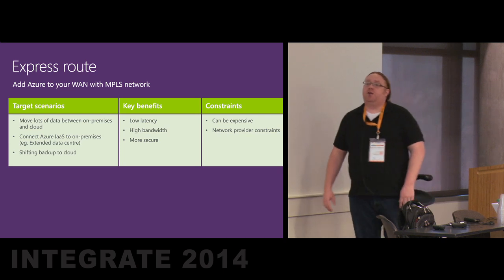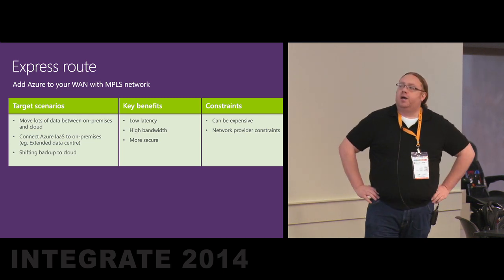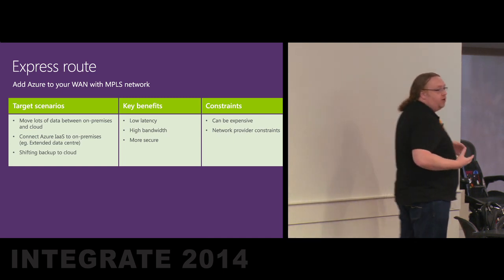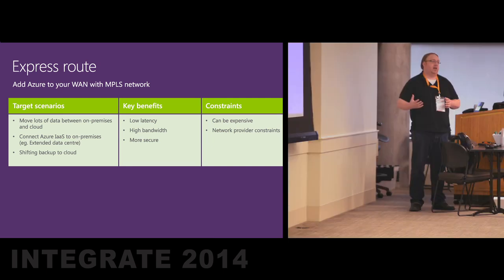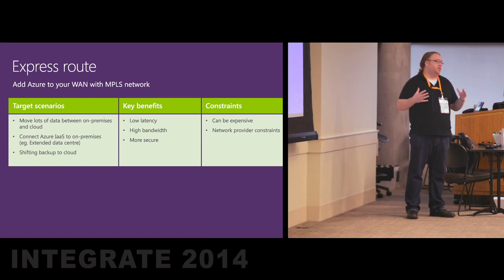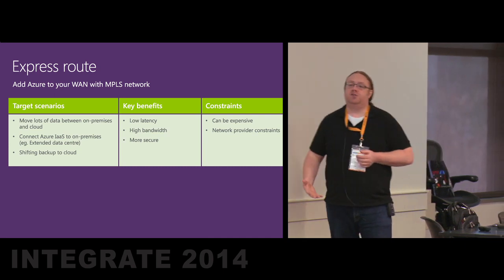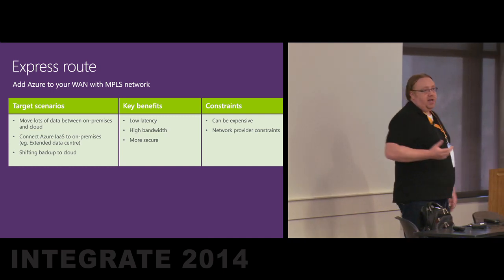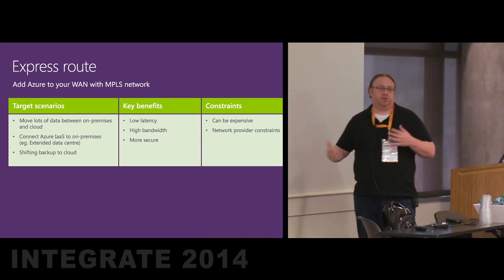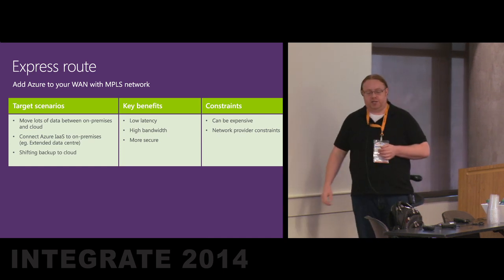First up is ExpressRoute, which has been out for a while but is probably one that people aren't that familiar with. It's a network technology where we extend your MPLS network and connect Azure as another data center on that network. The target scenarios are really about shifting large amounts of data with really good latency and bandwidth between your data centers. For high-performance applications or security concerns, ExpressRoute is a good choice because you're going over a private connection, whereas traditional VPN uses the public internet.